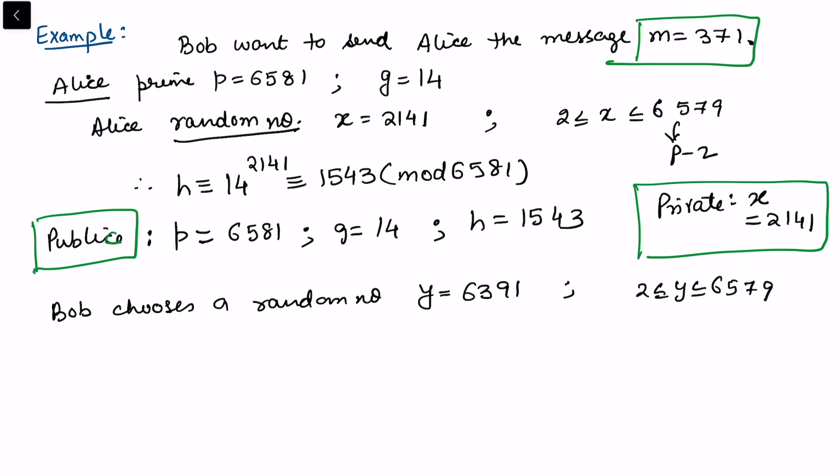So once Bob has selected this, Bob calculates r which is congruent to 14^6391. This is equal to 1968 mod 6581. So I'm just using some computation just to explain the process.